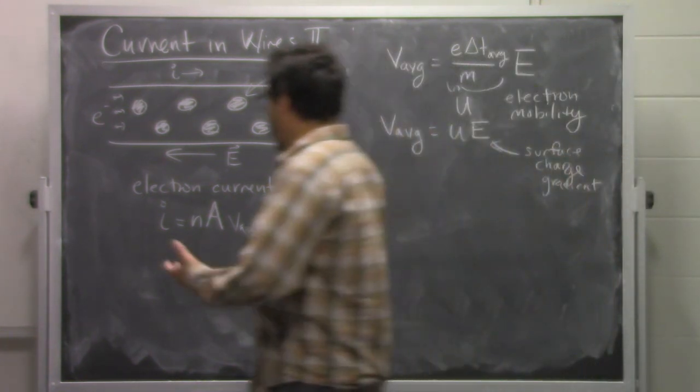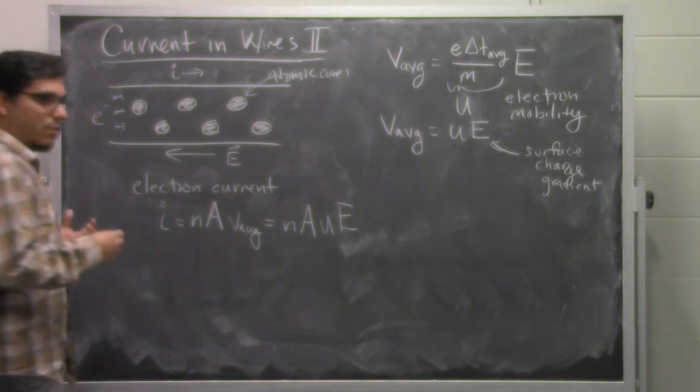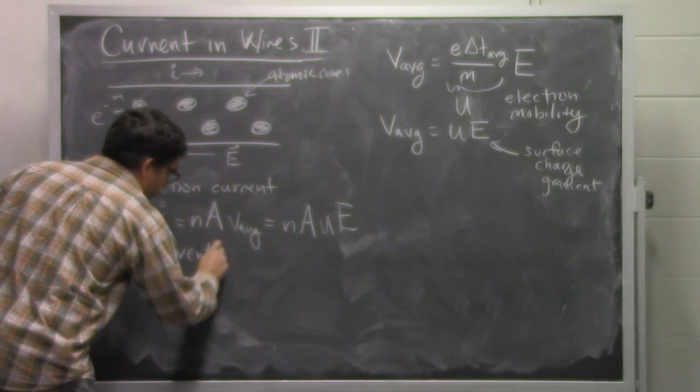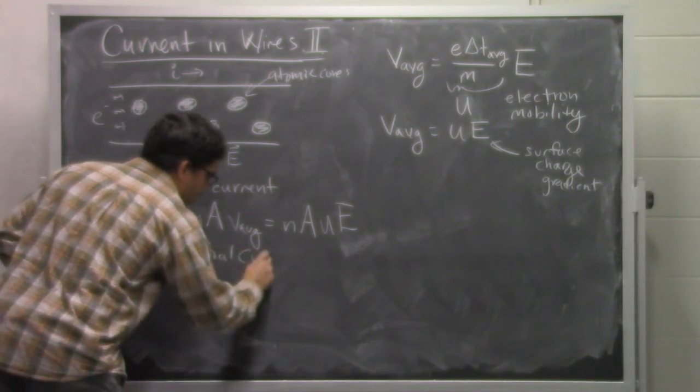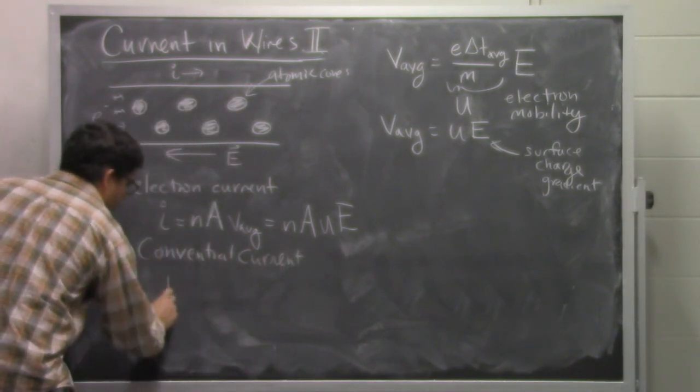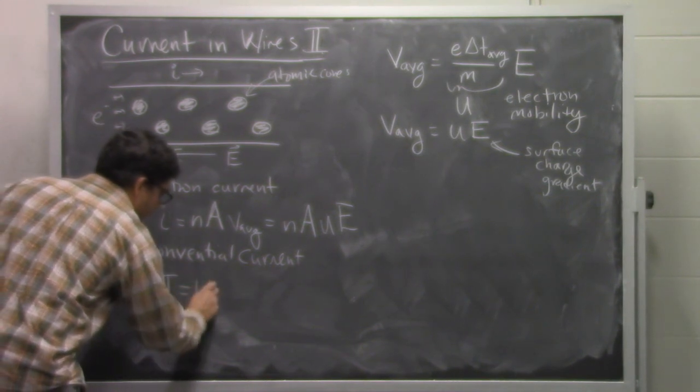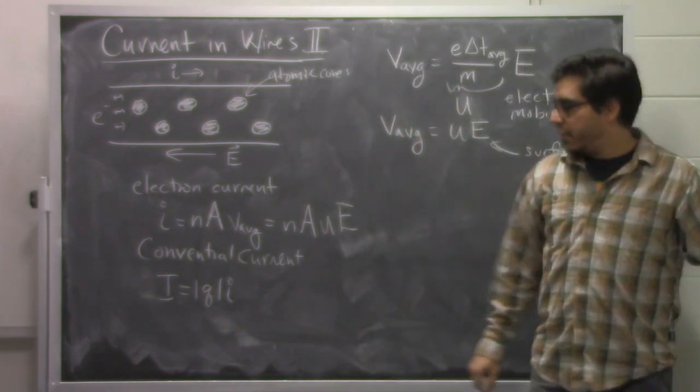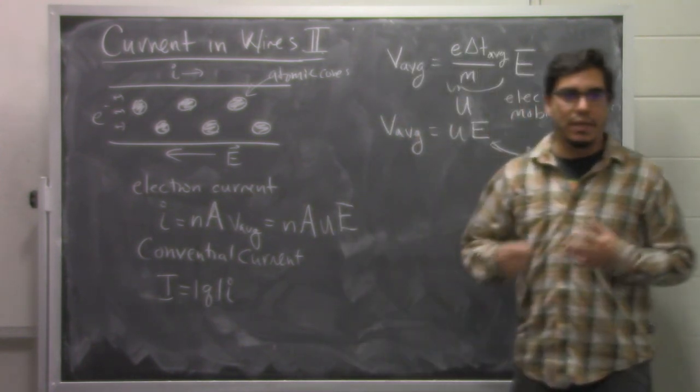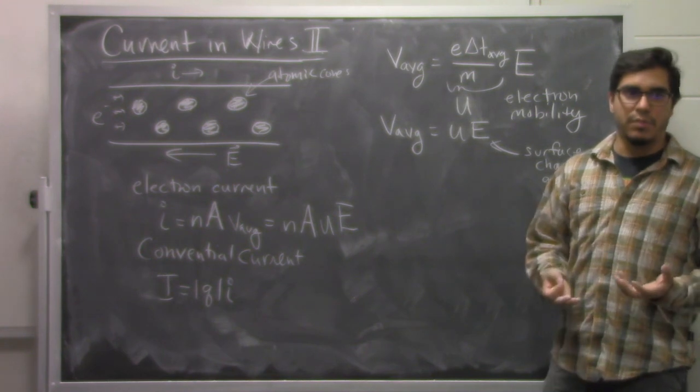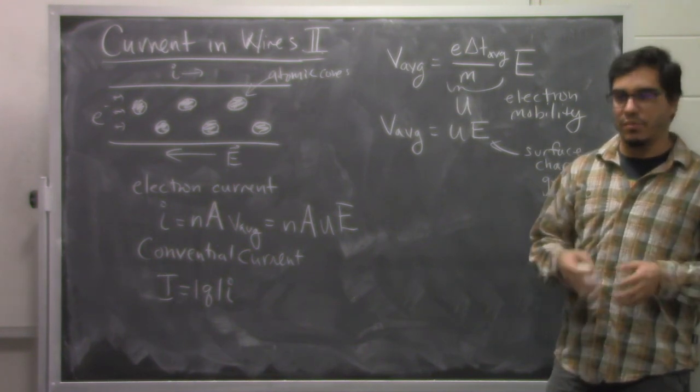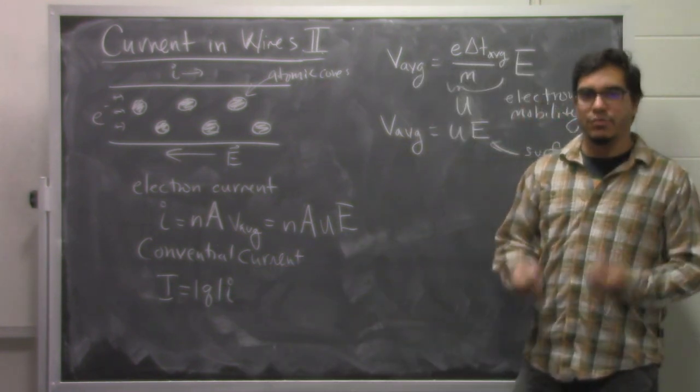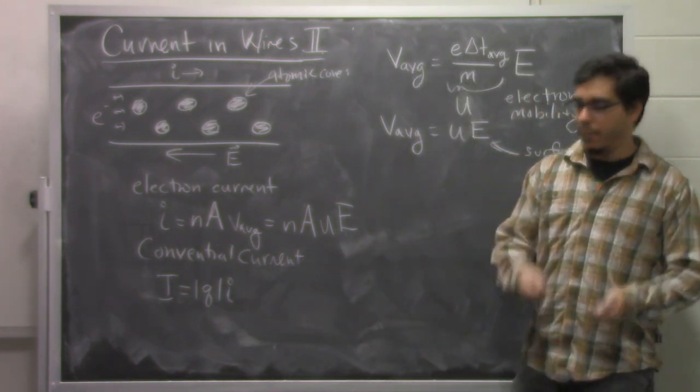Now, the thing that comes out of the wall, the thing that you can actually measure is the conventional current, which we defined as the product of the electron current and the value of the charge carriers in terms of their actual charge. And so this guy is the thing that when you measure something in amps coming out of the wall or when you look at a particular piece of electronic equipment and it tells you it requires this many amps, this is the thing that you're actually measuring. So this is a macroscopic quantity. We have tools that we can go in and we can probe and measure with.